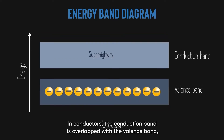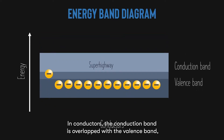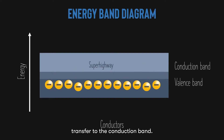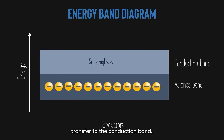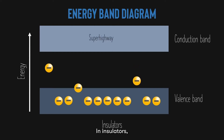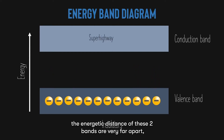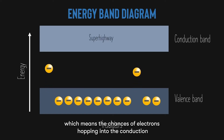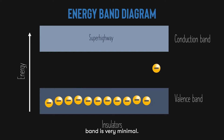In conductors, the conduction band overlaps with the valence band, which is why the electrons from the valence band can very easily transfer to the conduction band. In insulators, the energy distance of these two bands is very far apart, which means the chances of electrons hopping into the conduction band is very minimal.